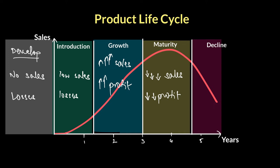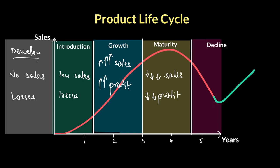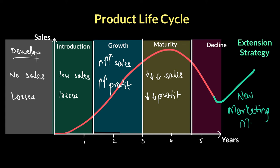As soon as a product reaches its maturity stage, that's where the marketing gurus get back to work. They have to find a way to fight back, gain momentum, and start seeing more growth come back to the product. Ideally, you want to see an upward trend in your sales again. Any time a business wishes to bring the graph up and bring in more sales, we call this an extension strategy. An extension strategy is nothing but a new marketing mix.